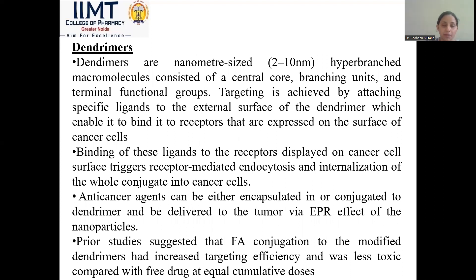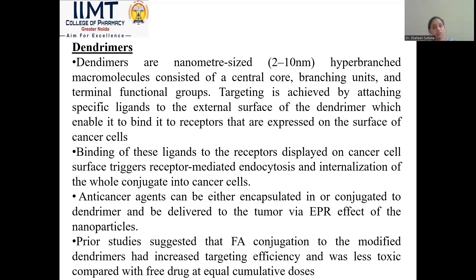Dendrimers are nanometre-sized hyperbranched macromolecules consisting of a central core, branching units, and terminal functional units. Targeting is achieved by attaching specific ligands to the external surface of the dendrimer, enabling it to bind to receptors expressed on the surface of cancer cells. These ligands bind to receptors on cancer cells and carry out receptor-mediated endocytosis, leading to internalization of the whole conjugate into the cancer cell. Anti-cancer agents can be either encapsulated or conjugated to the dendrimer and delivered via the EPR effect. Studies suggest that polyacid conjugation to modified dendrimers has increased targeting efficiency and was found to be less toxic than the free drug at equal cumulative doses.